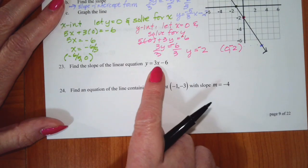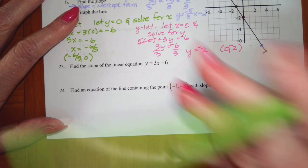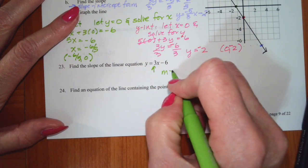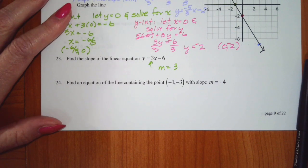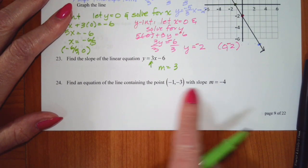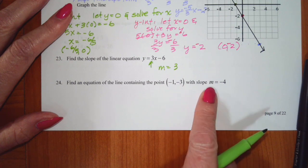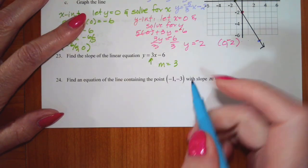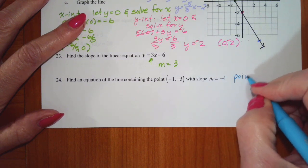Find the slope of the linear equation y equals 3x. Your slope is 3. For the next problem: find an equation of the line containing the point negative 1, negative 3 and a slope of m equals negative 4. Since it gives you a point and a slope, use the point-slope form.